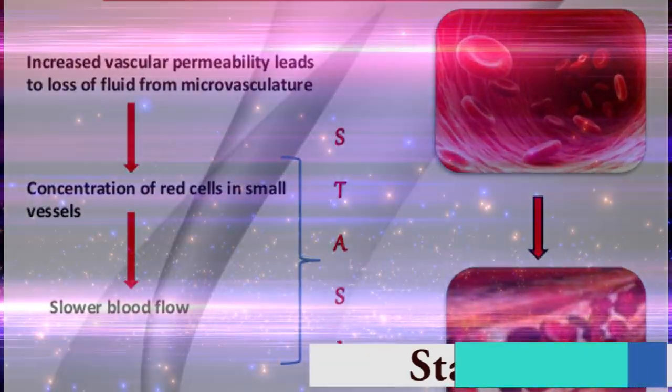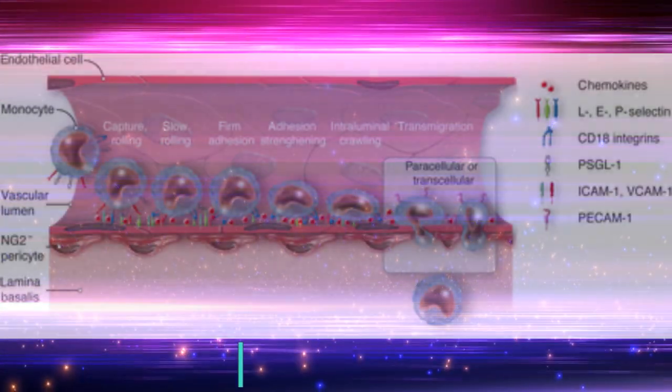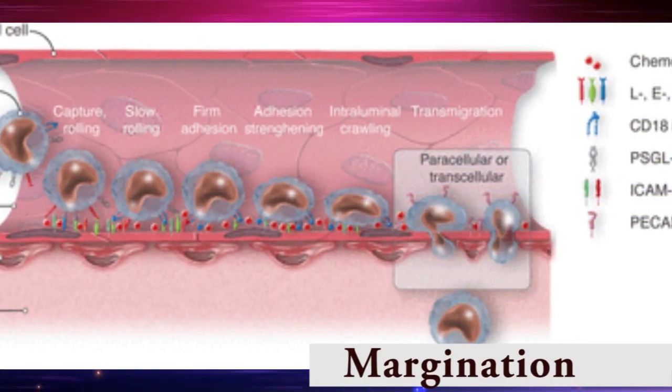As stasis develops, leukocytes begin to accumulate along the vascular endothelium.